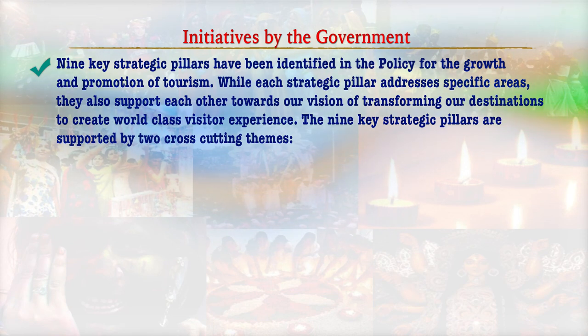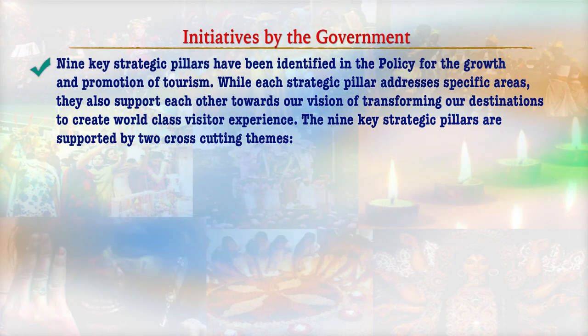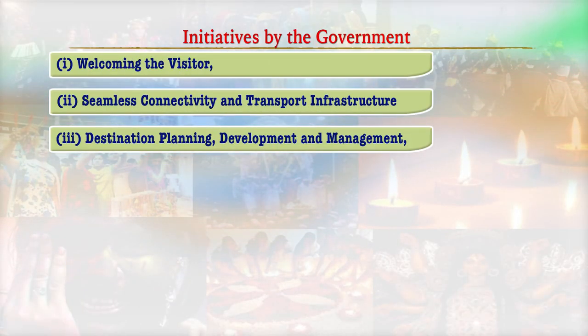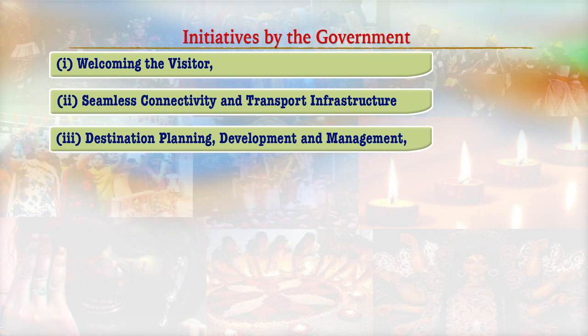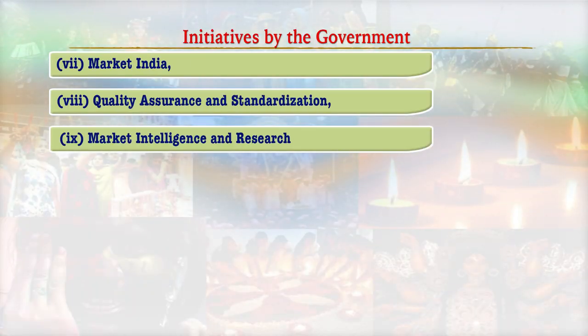Nine key strategic pillars have been identified under the latest draft tourism policy for the growth and promotion of tourism. While each strategic pillar addresses specific areas, they also support each other towards the vision of transforming Indian destinations to create world-class visitor experiences. The nine strategic pillars are: welcoming the visitor; seamless connectivity and transport infrastructure; destination planning and development management; business development and investment promotion; development and diversification of tourism products; skill development; Market India campaigns; quality assurance and standardization; and market intelligence and research.